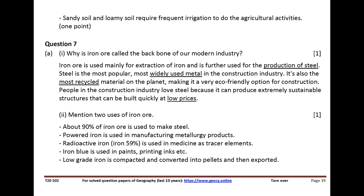Question 7. Why is iron ore called the backbone of our modern industry? Iron ore is used mainly for extraction of iron and is further used for the production of steel. Steel is the most popular and widely used metal in the construction industry. It is also the most recycled material on the planet, making it a very eco-friendly option for construction.